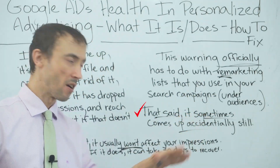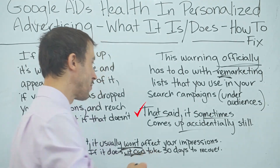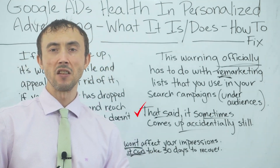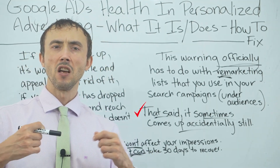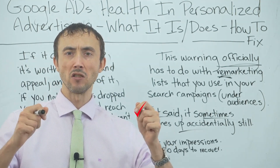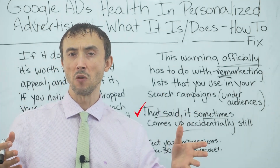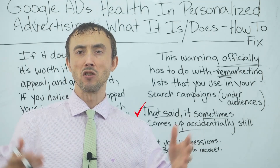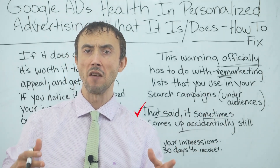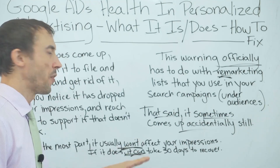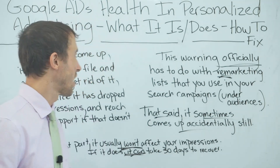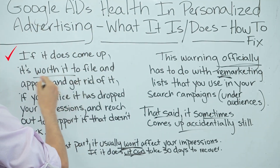The reason I made this video is to mention that sometimes this warning can actually affect your impressions on your campaigns, even though it's only supposed to affect impressions related to your remarketing-based traffic — specifically the people who've been to your site before and are on your remarketing audience list. If it does affect you, you should go ahead and file an appeal with Google Ads.